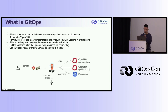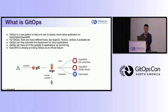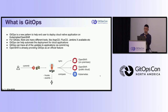What is GitOps? Basically, GitOps is a new pattern which helps end users deploy Cloud Native apps on different Kubernetes platforms like Kubernetes, OpenShift, Rancher, or others. For GitOps, there are many different tools you can leverage, like Argo CD, Flux, Jenkins, or others.